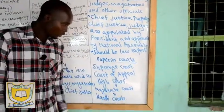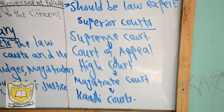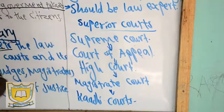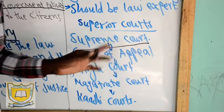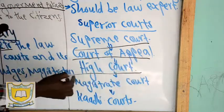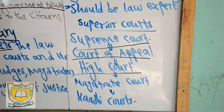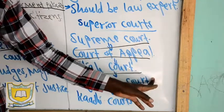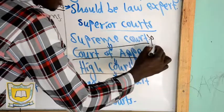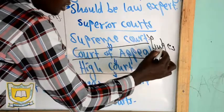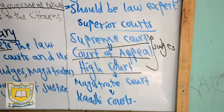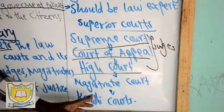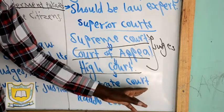We have courts in Kenya. The superior courts — there are three: the Supreme Court, which is the highest court in Kenya; then the Court of Appeal; then the High Court. Then from there we have the supporting courts — the subordinate courts. We have the magistrate courts, which are headed by magistrates. The Supreme Court is headed by the chief justice and around six other judges.